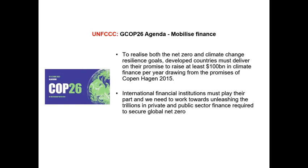To mobilize finance, developed countries must deliver on their promise to raise at least $100 billion annually from the Copenhagen 2015 promise. International financial institutions must play their part, and we need to unleash trillions in private and public sector finance. Going into COP27, there is a lot of talk from developing countries about the loss and damage mechanism being undermined. The major position is that developing countries need a dedicated financial mechanism for loss and damage, as seen with Cyclone Idai in Zimbabwe, Mwnamani in Mozambique, Beira, and floods in South Africa in Durban.